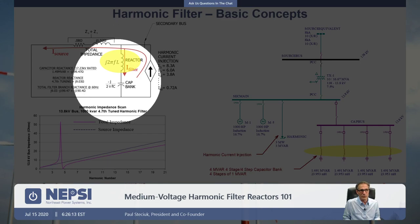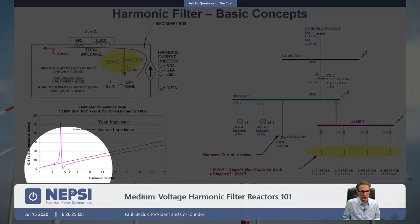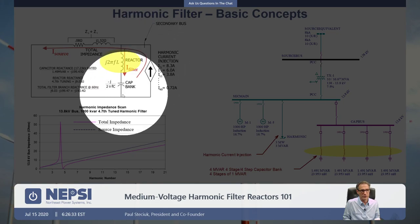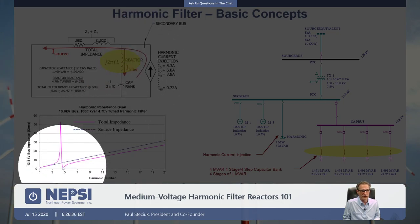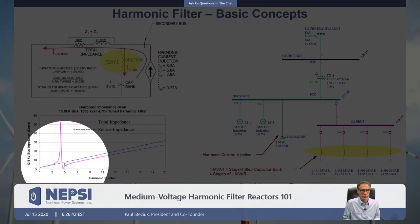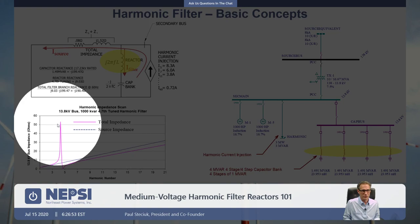When you have a capacitor bank, it causes resonance in the system. One of the key reasons you add a reactor to a capacitor bank is to tune it to a certain frequency. You can see on the lower left impedance scan the driving point impedance as seen from a harmonic-producing device. We're tuned at about the 4.7 harmonic here. All capacitor banks create resonances — even harmonic filters do — but harmonic filters control the resonant point.